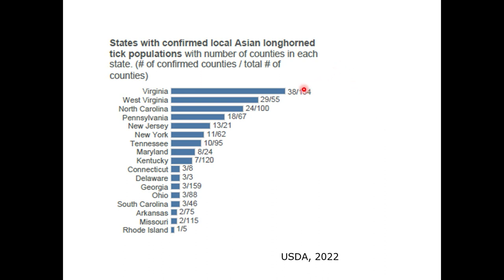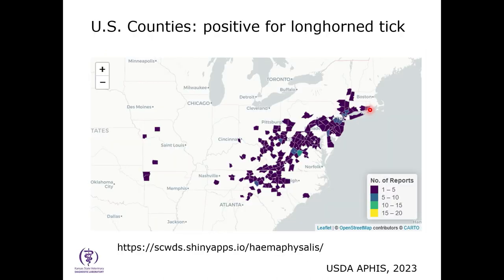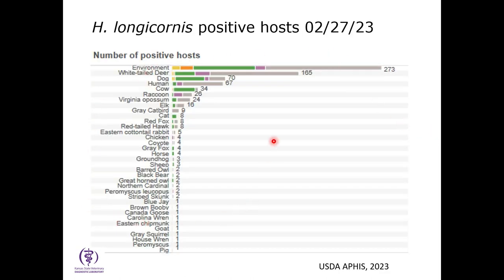This USDA map shows the counties where this tick has been found, with the denominator being the number of counties in the state and the numerator being the number of positive counties. Some states have many positive counties, with the heaviest concentration in Virginia and West Virginia. There are also two counties in northwest Arkansas and three counties in Missouri where this tick has been located. A concern is that many of the species this tick has been found on include migratory birds — since these ticks don't need males, just one female could start a population in a new area.